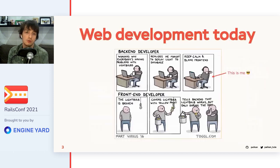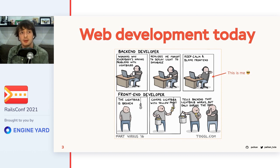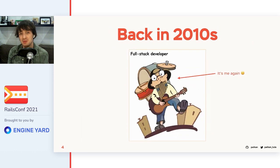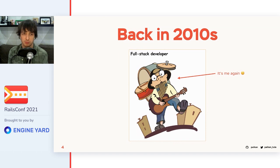Web development today has this clear separation of backend and frontend engineers — everyone does their job and does it well. But maybe five or even ten years ago, when I started working on Ruby on Rails projects, I've been doing everything: HTML, Ruby, JavaScript, or actually CoffeeScript. I was able to build a product alone. I miss those times a little bit.